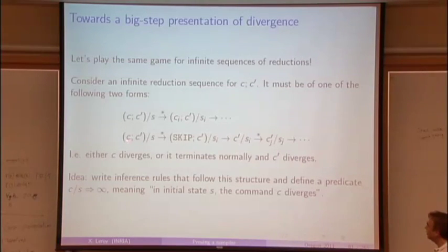Or at some point, c reduces to skip, at which point we switch to c prime, and now we have our infinite reduction sequence for c prime. So basically either c diverges or c terminates and c prime diverges.